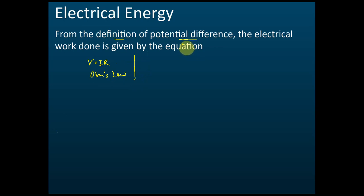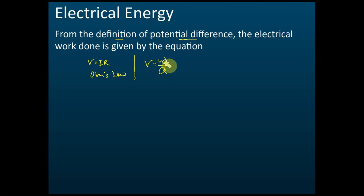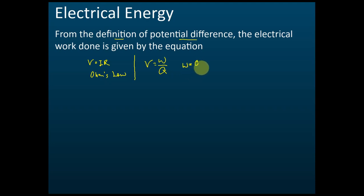Work divided by charge — yes, that's correct. So V = W/Q, because potential difference is defined as work done per one unit of charge between two points: how much work is done to bring one coulomb of charge from one point to another. From that definition we get V = W/Q, and therefore electrical work done W = QV.